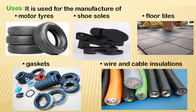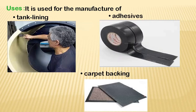Styrene rubber is used in the manufacture of motor tires — for bikes, autos, three-wheelers, or four-wheelers — which must bear heavy loads and friction. It is also used for shoe soles, floor tiles, gaskets, wire and cable insulations, tire tank linings, adhesives, and carpet backings — both for tough industrial applications and household purposes.